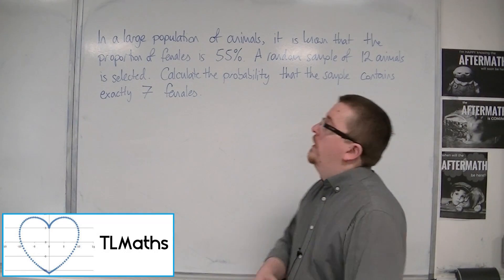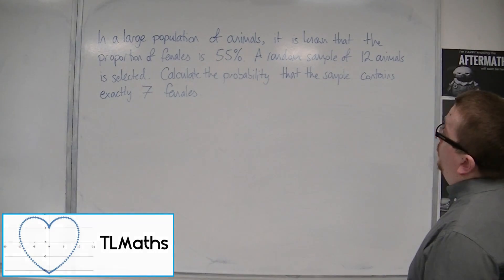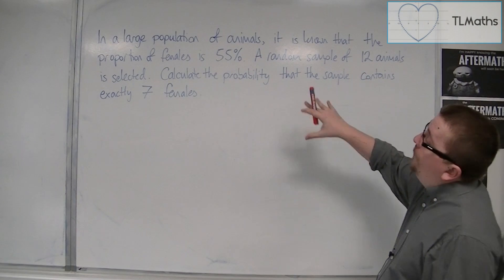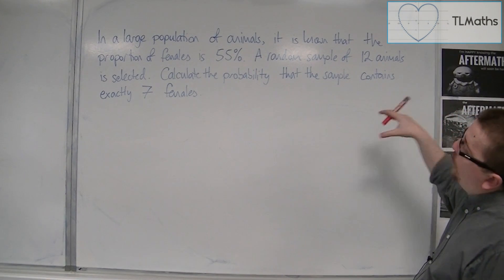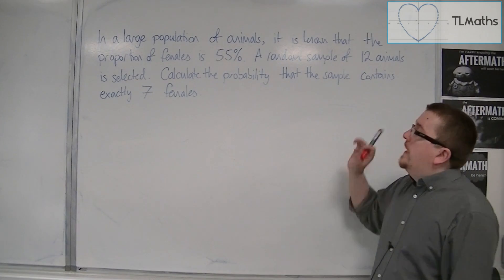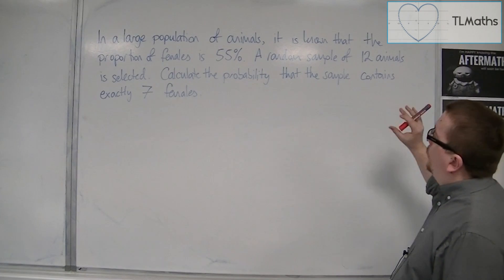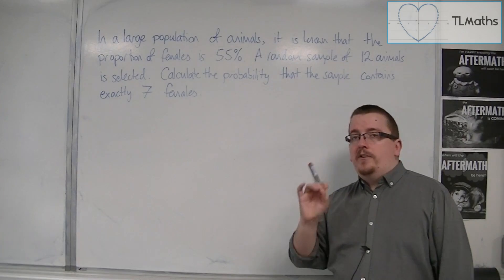So let's look at a problem. In a large population of animals, it is known that the proportion of females is 55%. A random sample of 12 animals is selected. Calculate the probability that the sample contains exactly 7 females.